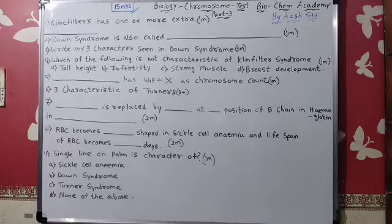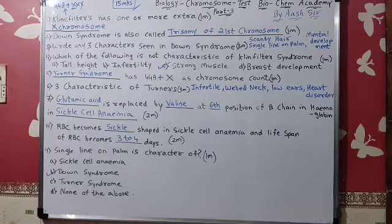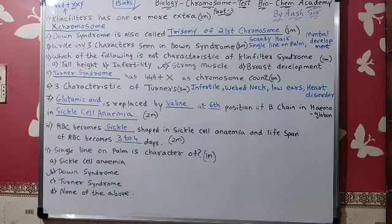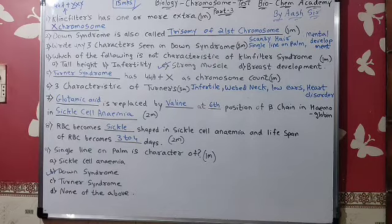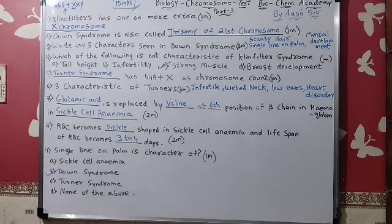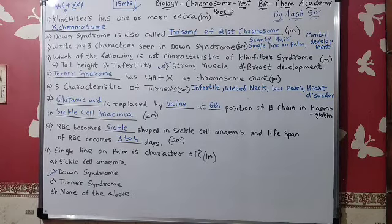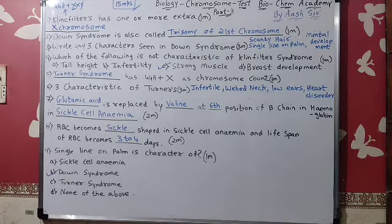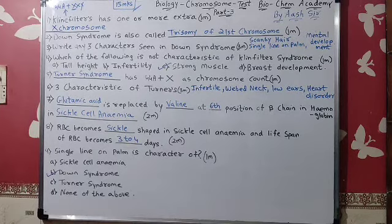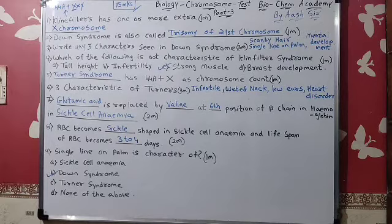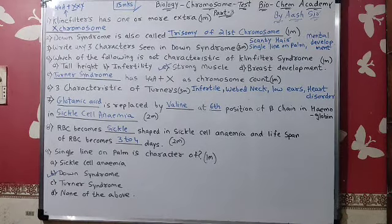Okay, so next I will be writing answers now. Number one: Klinefelter syndrome has one or more extra X chromosome. I have written Klinefelter as 44A plus XXY — that is their chromosome number. Only one extra X is there, but it can be more than one X: XXXY, XXXXY. The more X chromosomes there are, the more feminine characters will be observable. Characteristics are harder to develop.